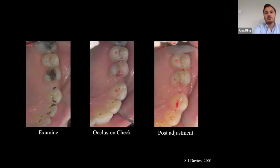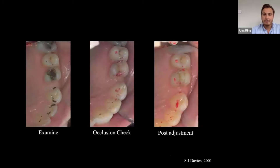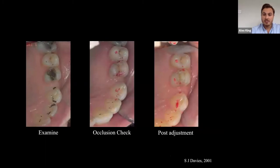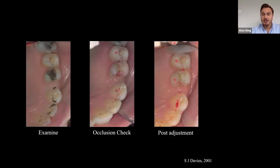For example: in the examine stage, there was a mark on the distal of the upper three. After restoring the upper four composite, the check showed no mark on the distal of the three but a very heavy static contact on the restoration. We then polished or adjusted the restoration, checked again, and restored the mark on the distal of the three — a more even occlusion. Look for new heavy contacts or loss of contacts, adjust, then check again.